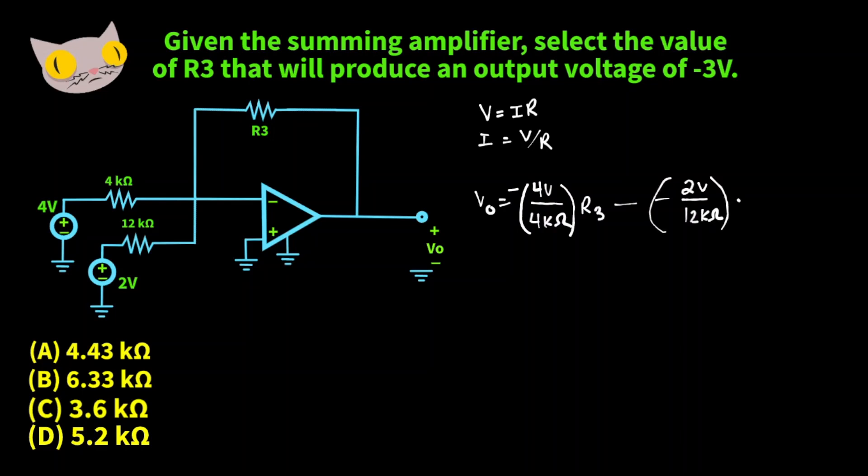Negative 3 volts, and we'll multiply that by R3. We want our output voltage to be negative 3 volts. So we'll rewrite this as negative 3 volts is equal to 4 over 4000. That's going to give us 1 milliamp. And let's not forget our negative sign.